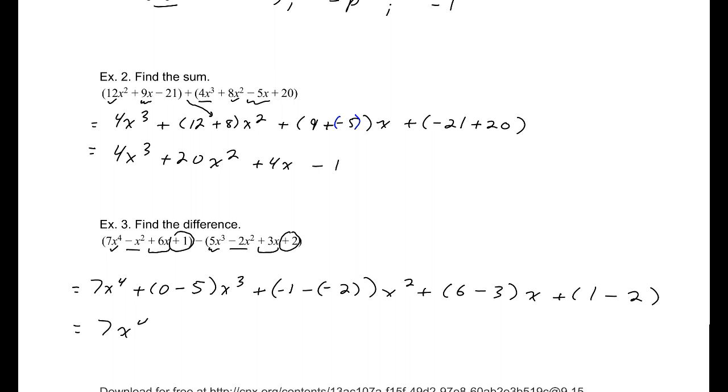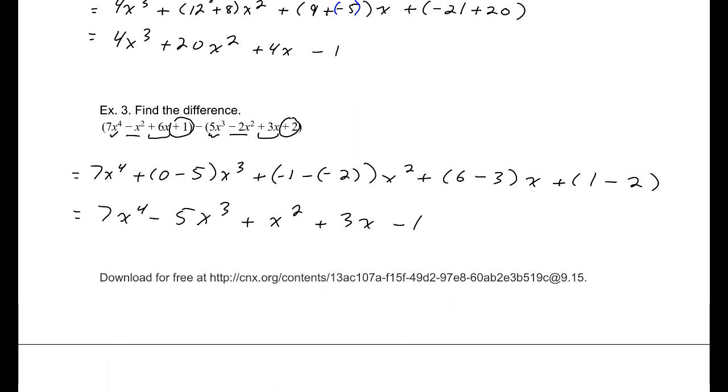So, 7x to the fourth, minus 5x cubed. That'll be positive 1. So, plus 1x squared, plus 3x minus 1. And that's our difference. We have different exponents in all of them. We cannot combine any of those. So, that's what we get.